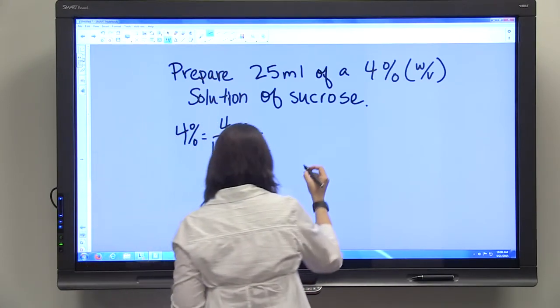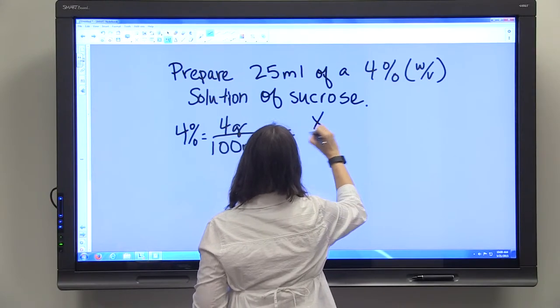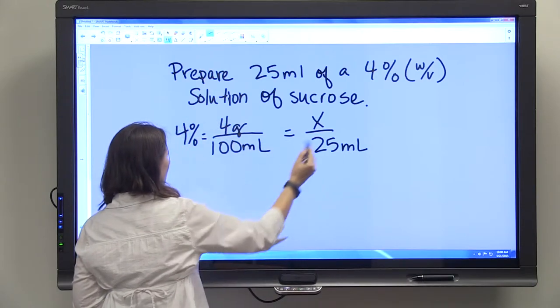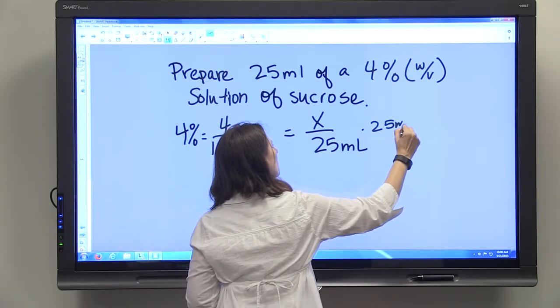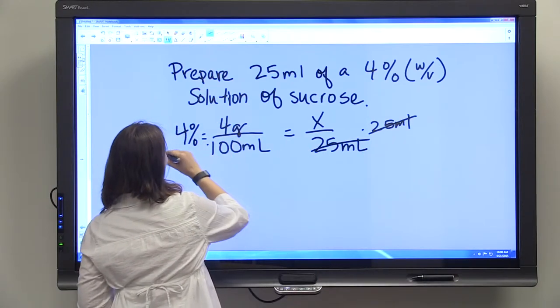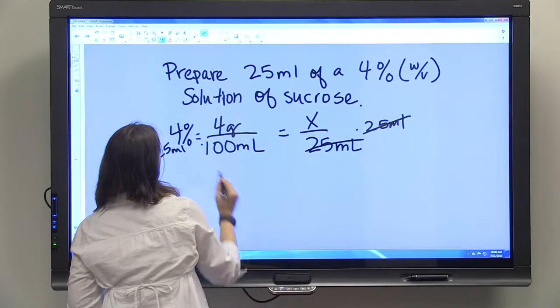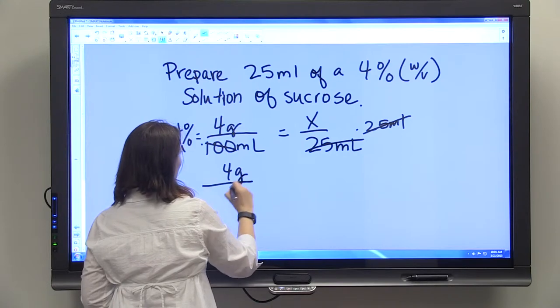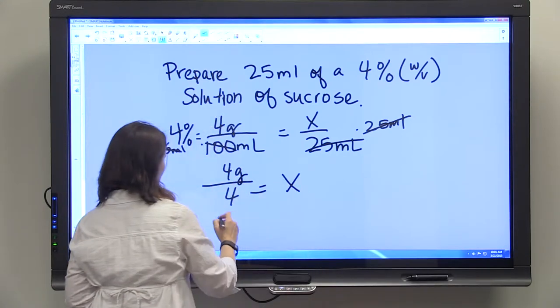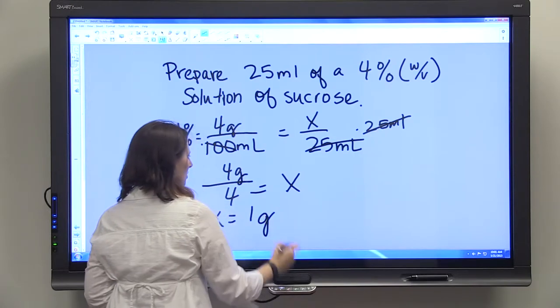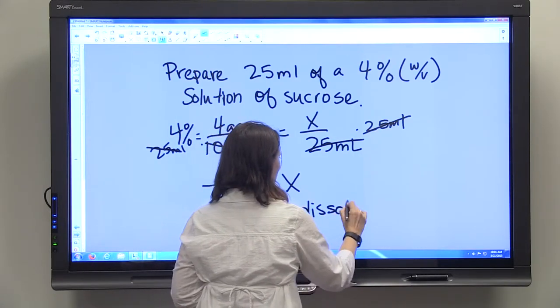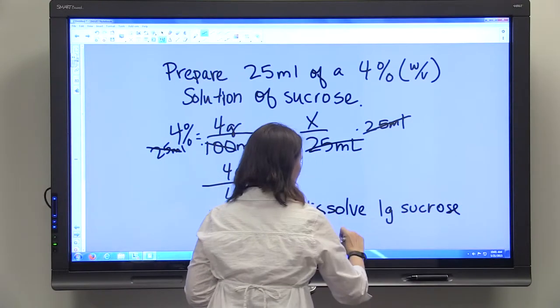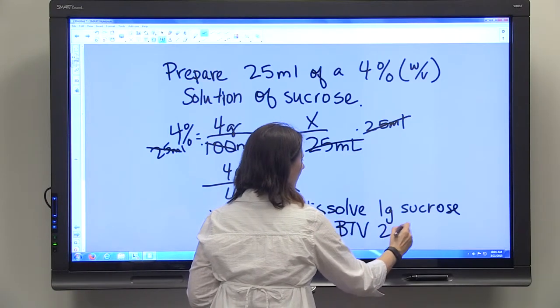That helps you start with your proportion. We know we need a 25 milliliter solution that we're ending with. We're going to multiply both sides by 25 mL, can simplify that so that it's 4 grams over 4 equals X. X is equal to 1 gram, so then you would dissolve 1 gram sucrose and bring to volume 25 mL.